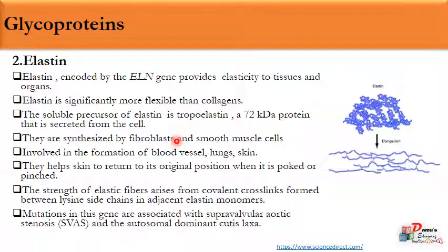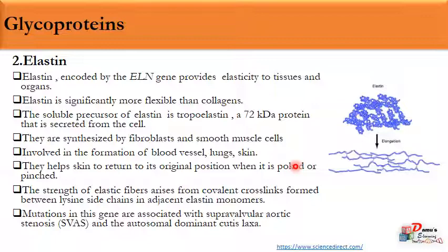The strength of elastic fibers arises from covalent cross-linking between lysine side chains in adjacent elastin monomers. We can see the monomers, and the connecting strand is the lysine side chain that gives the elastic fiber its strength — allowing it to elongate and return to the normal position as needed. Mutations in this gene are associated with supravalvular aortic stenosis and autosomal dominant cutis laxa, affecting circulatory tissues that need to dilate or relax according to biological need.